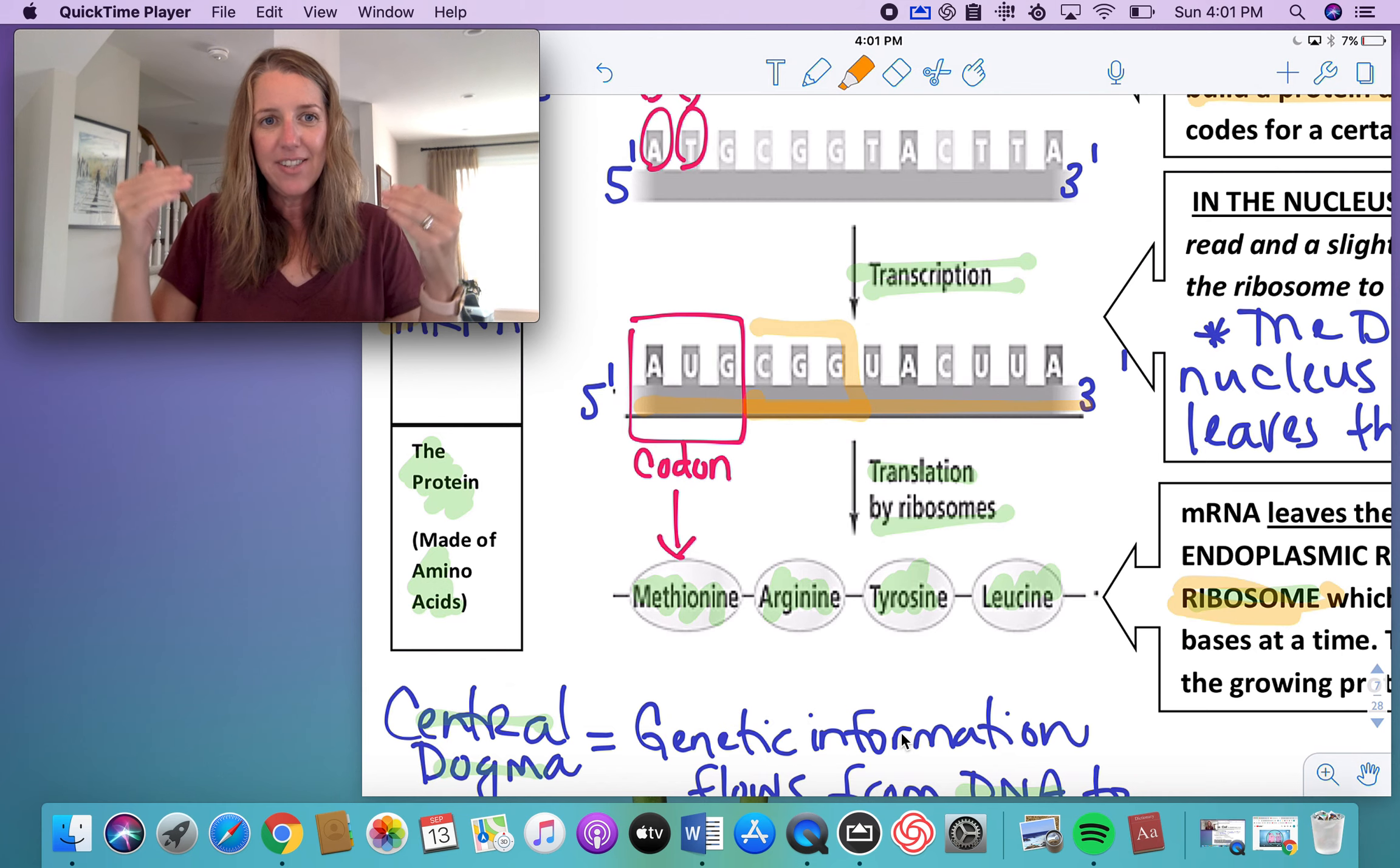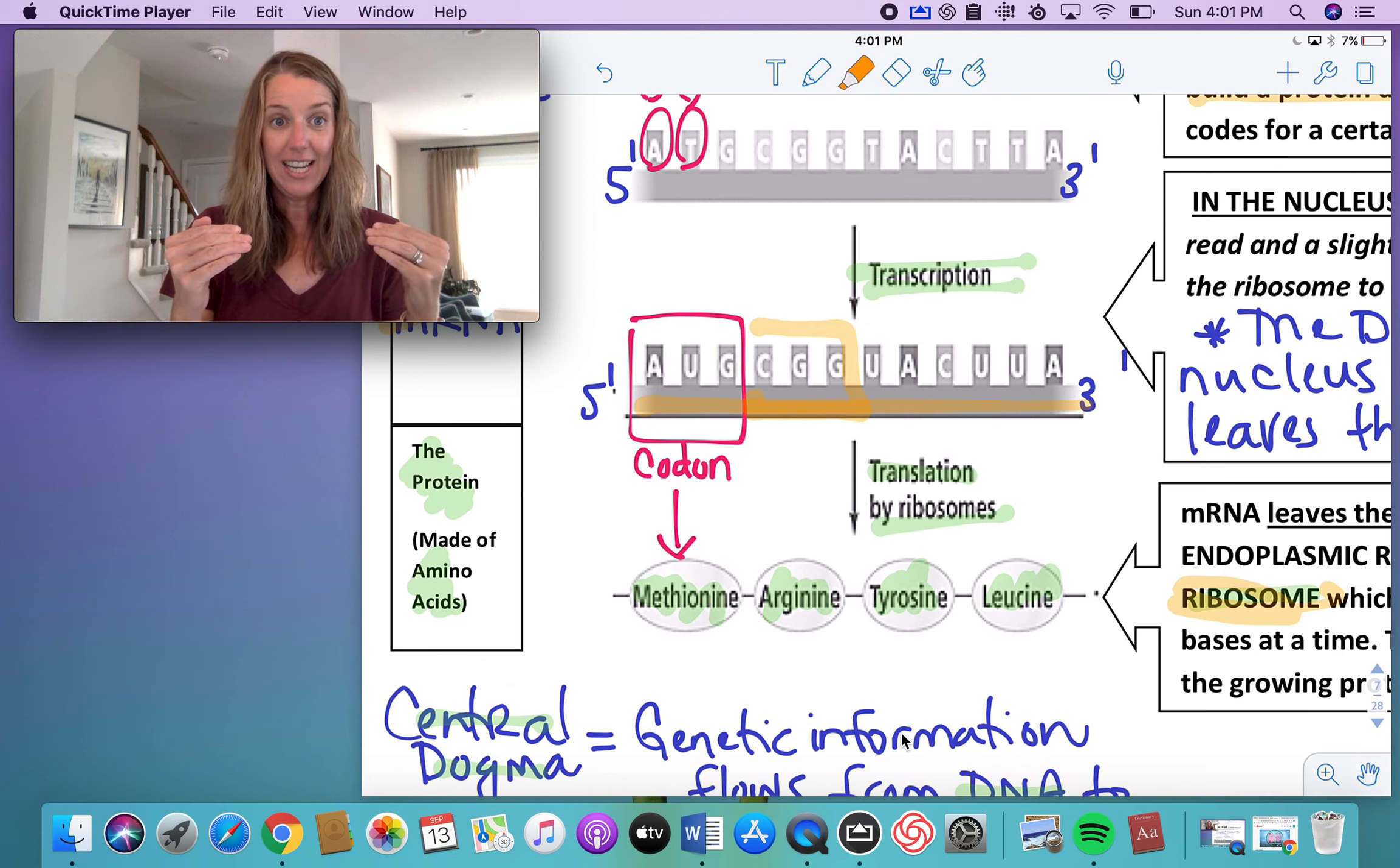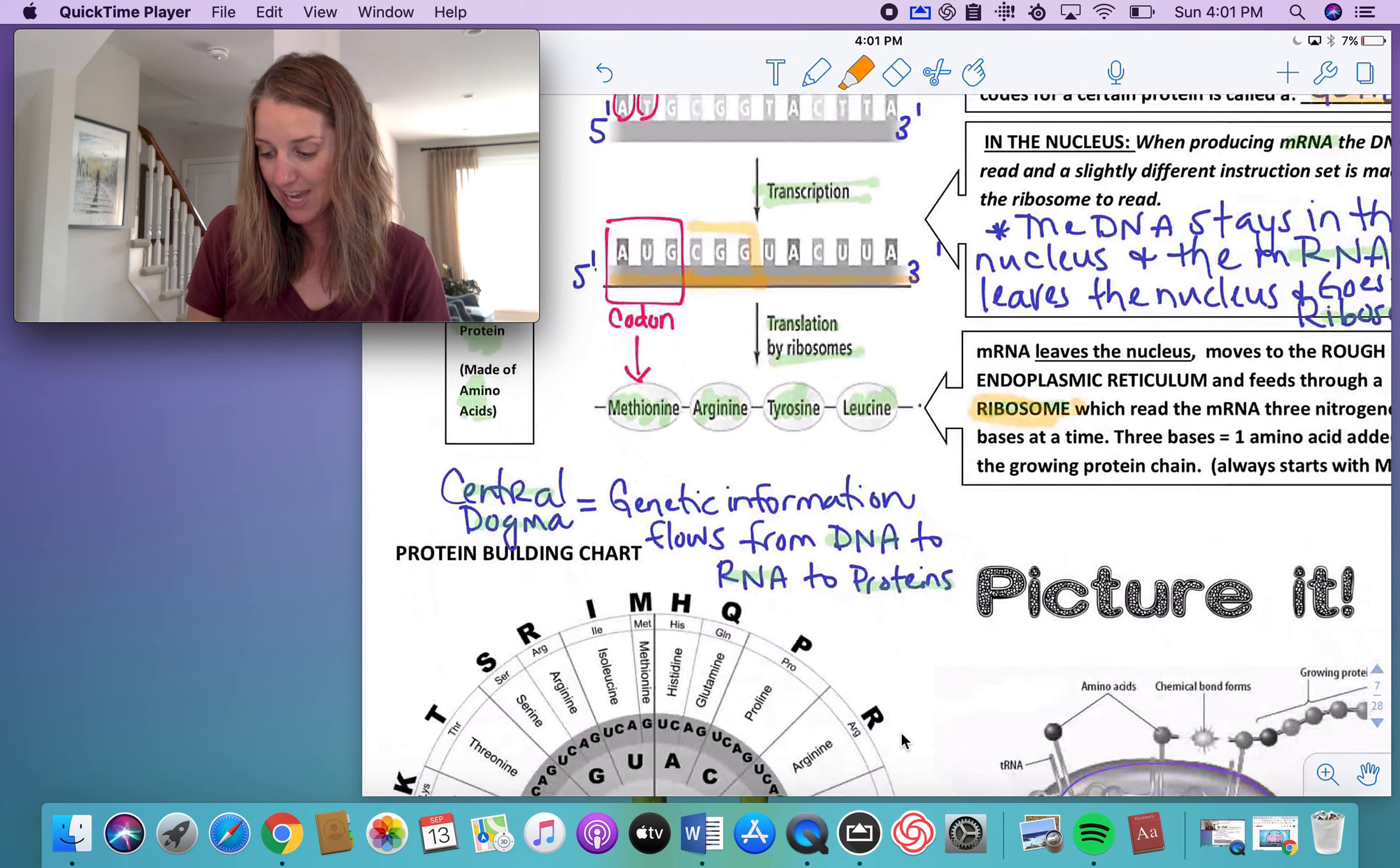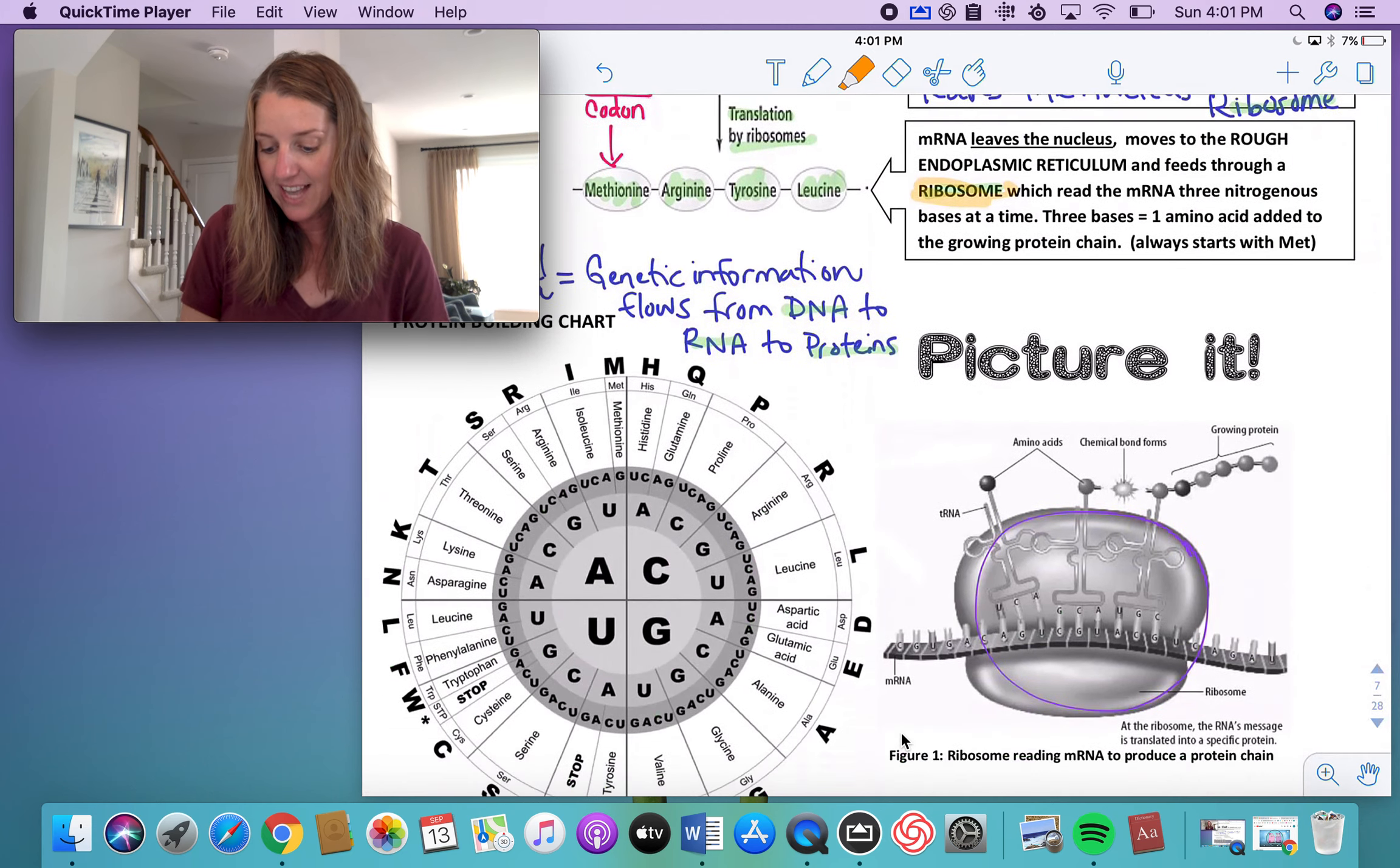So this is how the cell takes the message in your genetic code, makes it into a message that can leave the nucleus, find a ribosome, and then translate it into the amino acids that are the building blocks for a protein. Are you with me? That's a big step. How does that work? What does that look like?